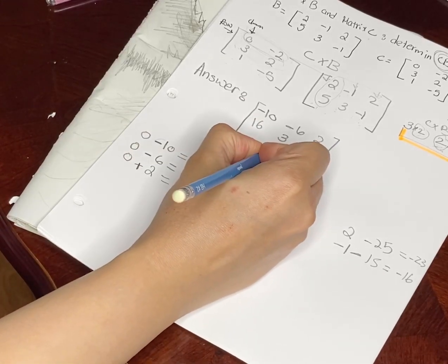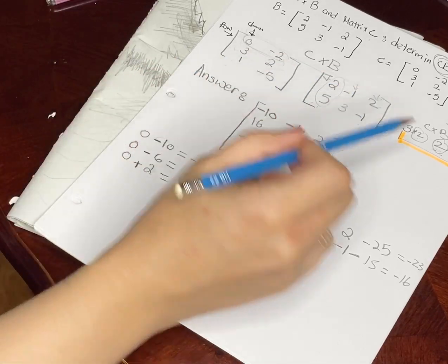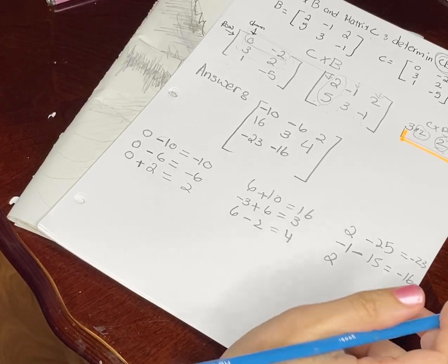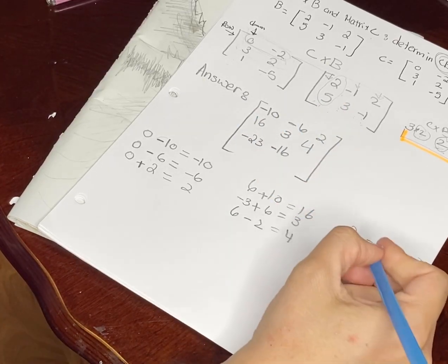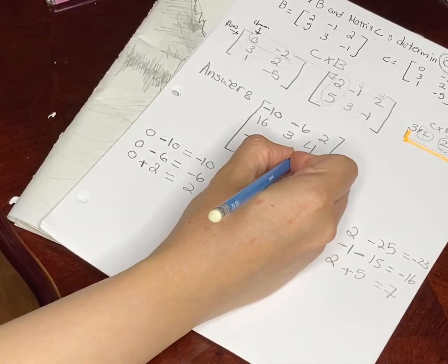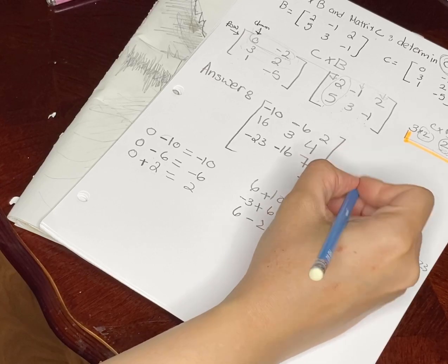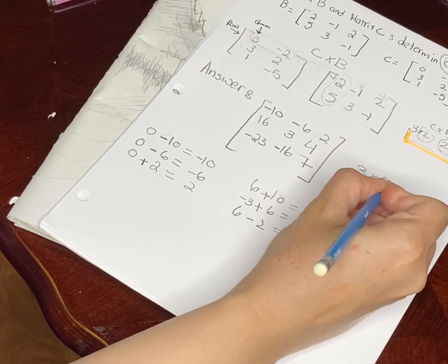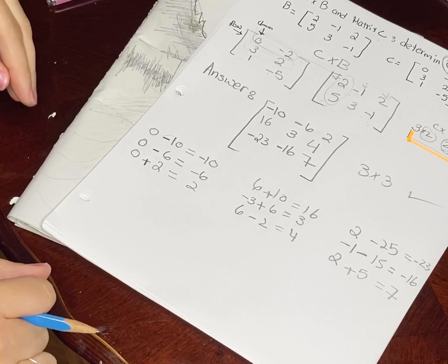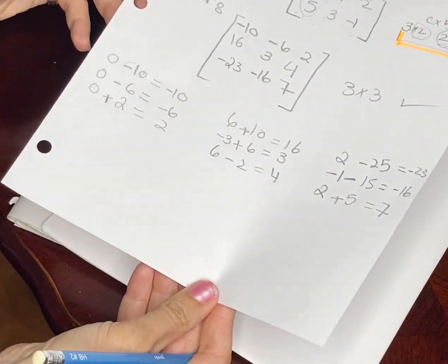Last entry — last row, third column: one times two is two, negative five times negative one is positive five — so two plus five is seven. We now have our complete 3×3 matrix and that's it. Thank you.